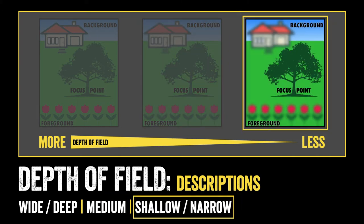And last, we have what we call a shallow or a narrow depth of field. In this case, both the background and the foreground are very out of focus. This allows the eye to focus solely on the tree, which is the focal point of the image.